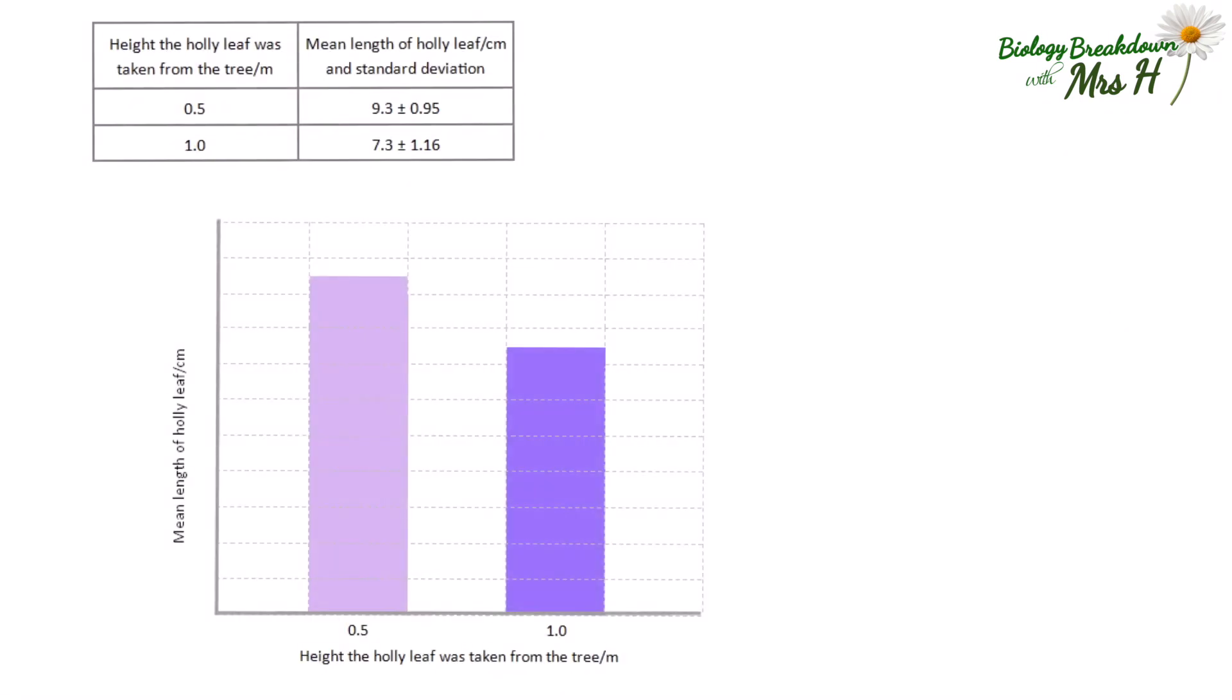If we plot this data as a simple bar chart we can see that the mean length of Holly leaves measured at 0.5m high on the tree was greater than the mean length at 1m high. But there is variation about the mean which is shown as the standard deviation in the table.